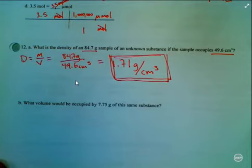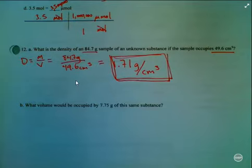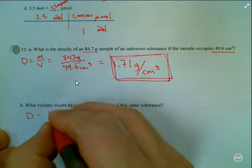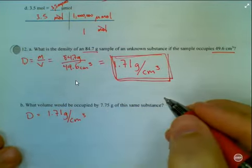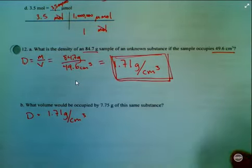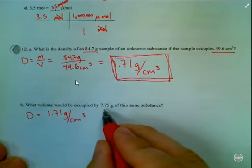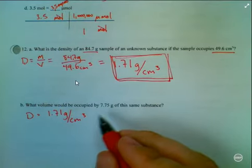Part b, a little bit tougher. What volume would be occupied by 7.75 grams of this same substance? And so we have a density of 1.71 grams per cubic centimeter. Okay, so we have that density, but if we have 7.75 grams of that substance, what is the volume going to be?